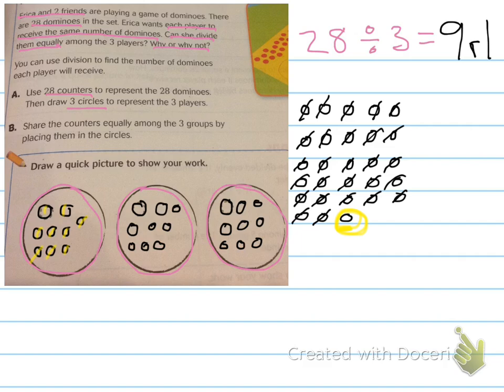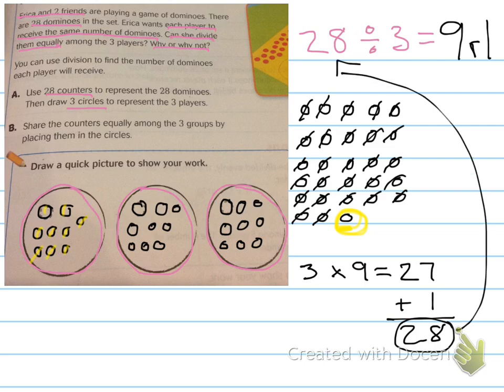A quick way to check your work for division problems: divisor times quotient plus your remainder, and what does that give you? Your dividend. If you did it correctly you should get your dividend. So divisor times quotient add your remainder and you should get your dividend.